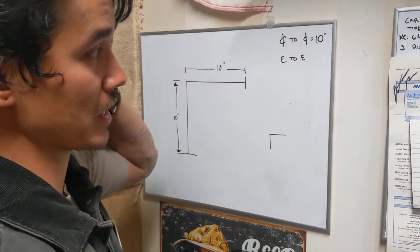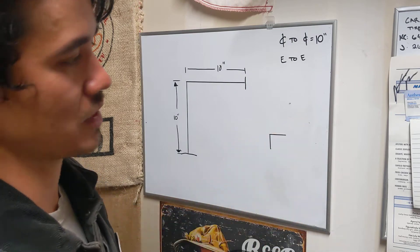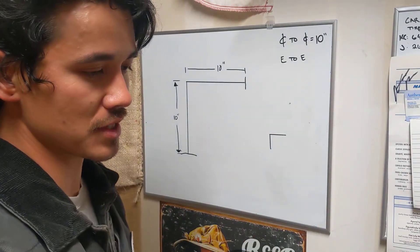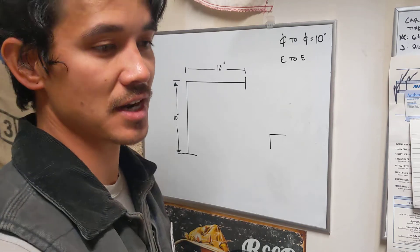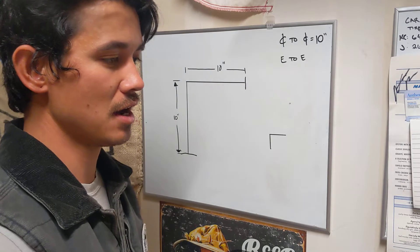If you're an apprentice like me, your journeyman will generally give you center to center because they want you to practice doing your takeoffs. Every fitting is going to have its own takeoff. Charlotte uses a PVC and a cast iron fitting book which gives you all of the measurements and takeoffs of each fitting.